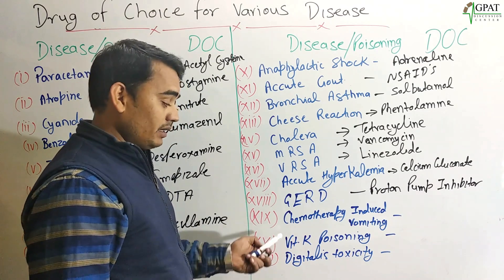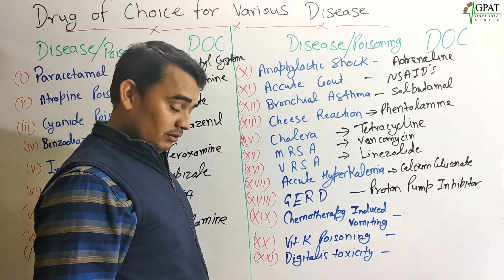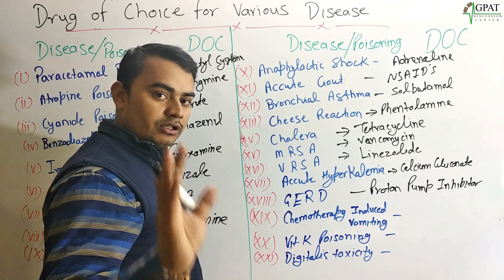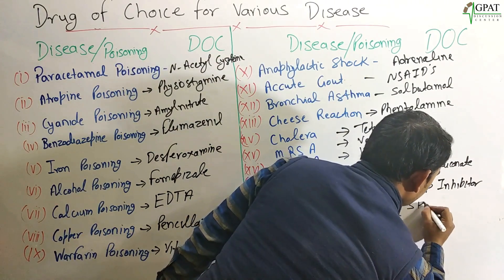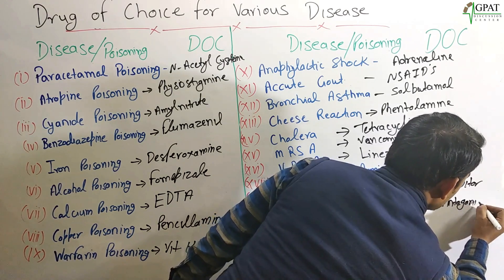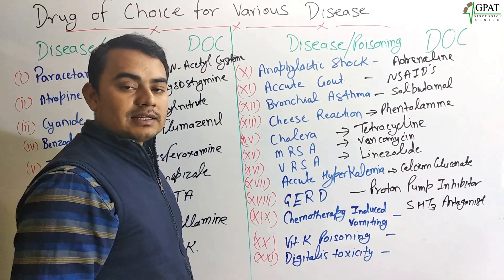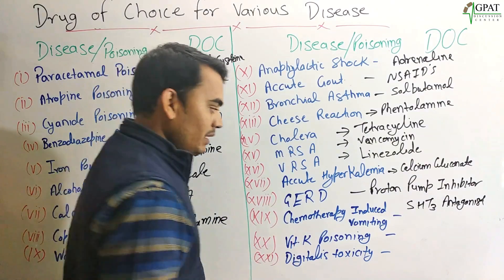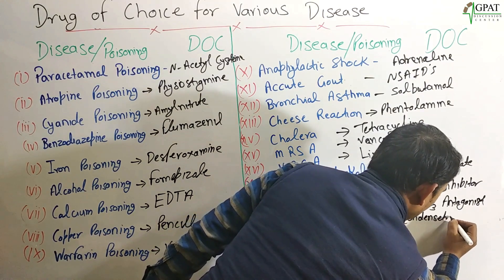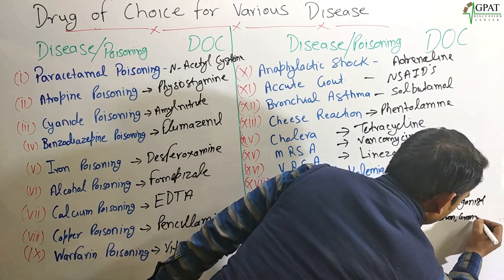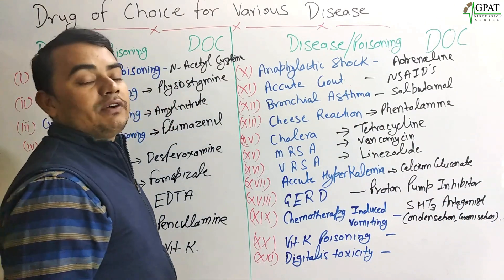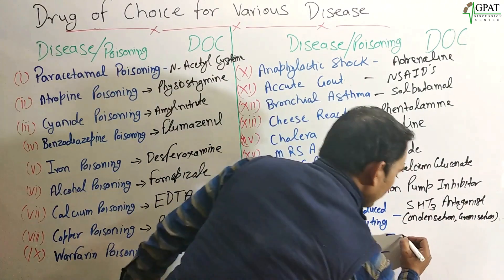Next: Chemotherapy-induced vomiting — very important. This is a condition of emesis. We use antiemetic drugs, but for chemotherapy-induced vomiting specifically, the drug of choice is a 5-HT3 antagonist. Drugs in this class include Ondansetron and Granisetron.